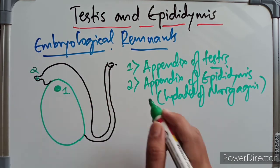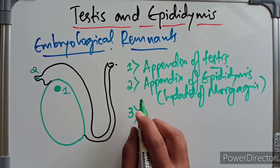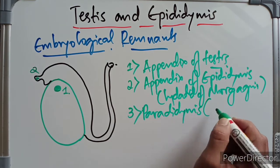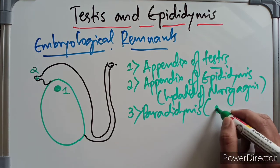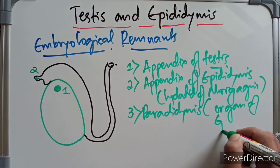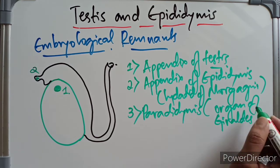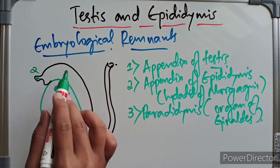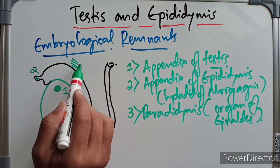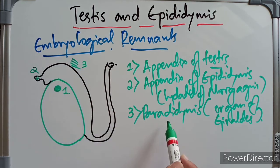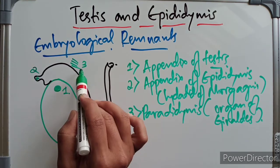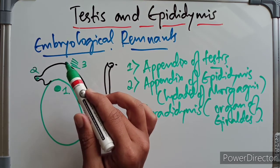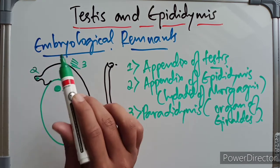The third remnant is the paradidymis, also called the organ of Giraldès. It consists of three or four tubules found in the spermatic cord just above the head of the epididymis, and these are the remnants of the caudal mesonephric tubules.